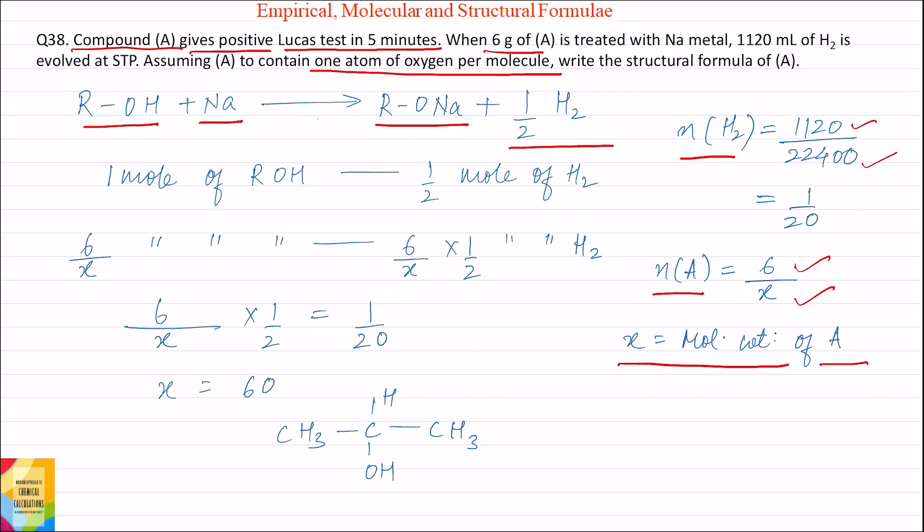One mole of alcohol gives half mole of hydrogen. Therefore, 6/x moles of A will give 6/x times 1/2 moles of hydrogen. We can equate the moles of hydrogen: 6/x times 1/2 equals 1/20. Solving this, the value of x is 60. Therefore, the molecular weight of A is 60.